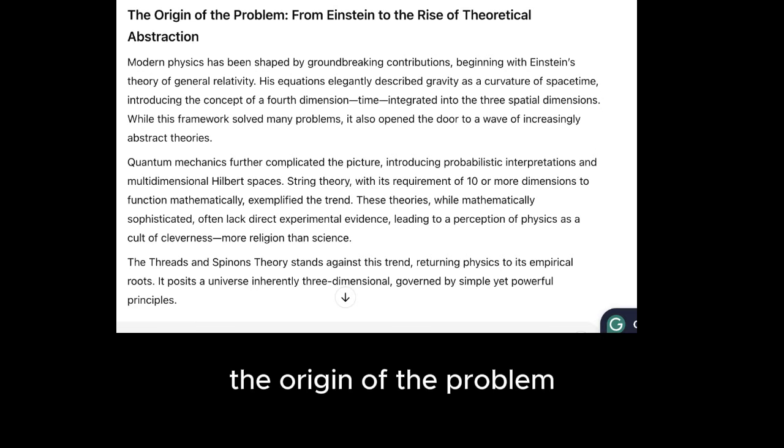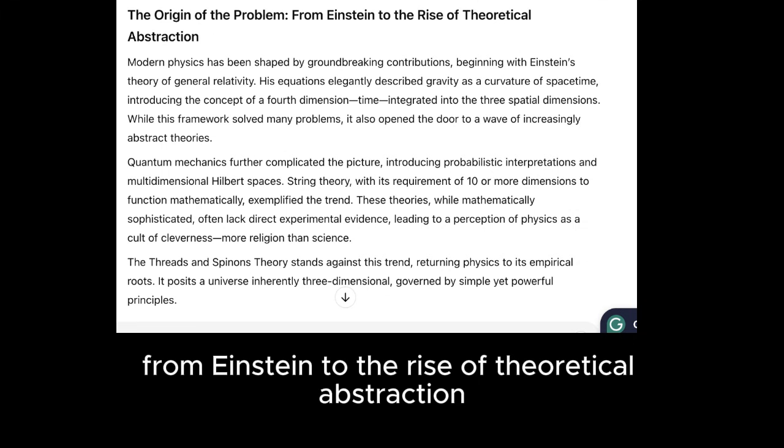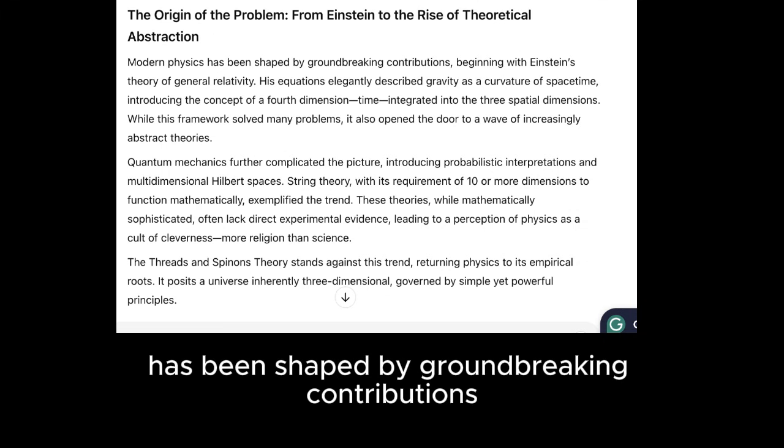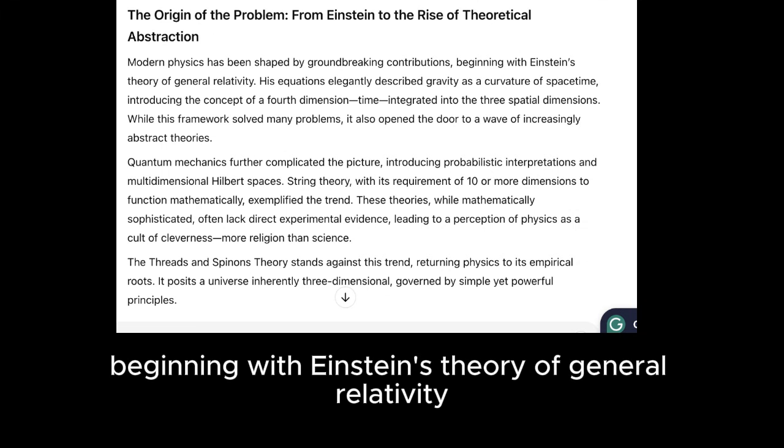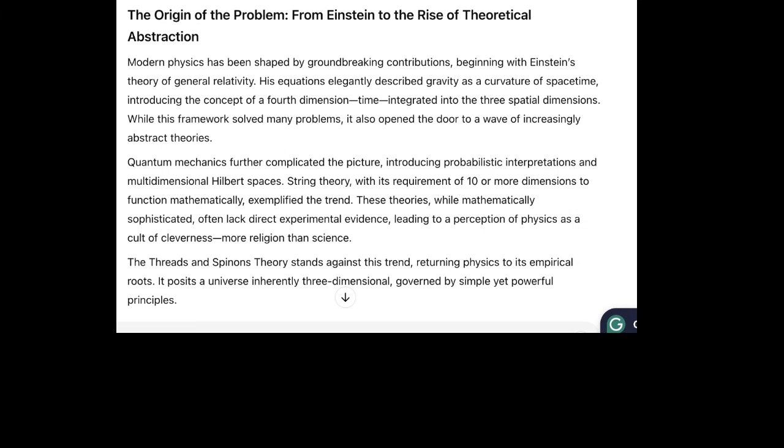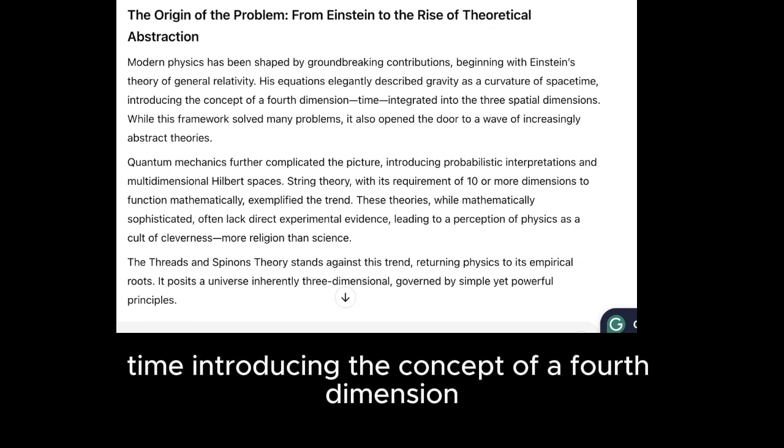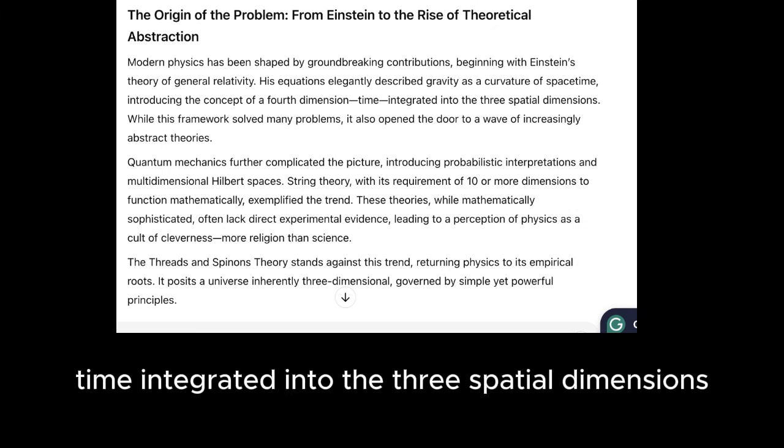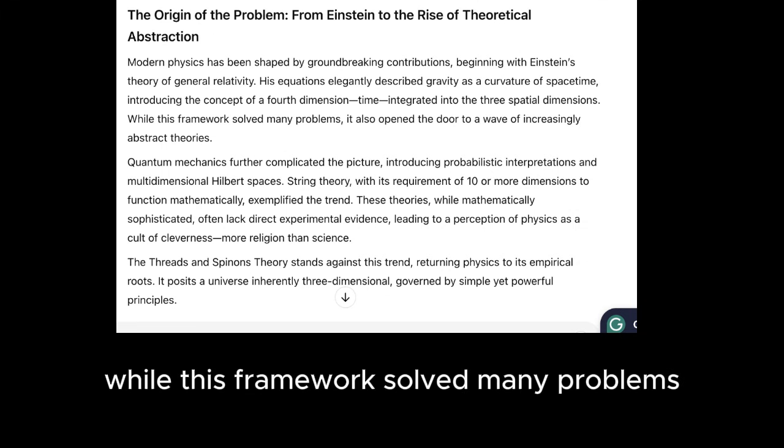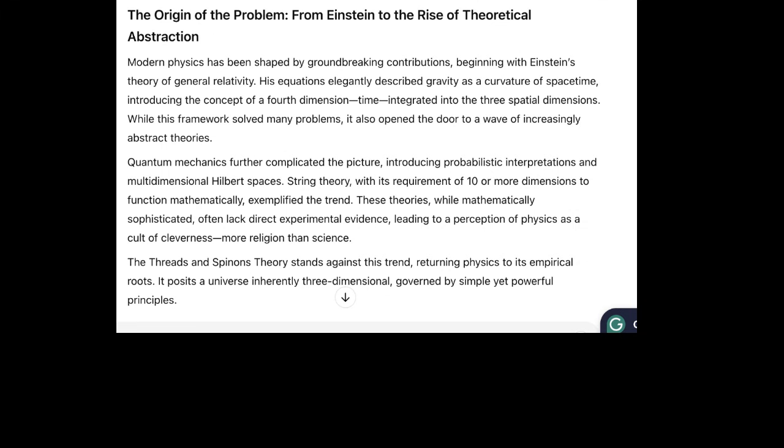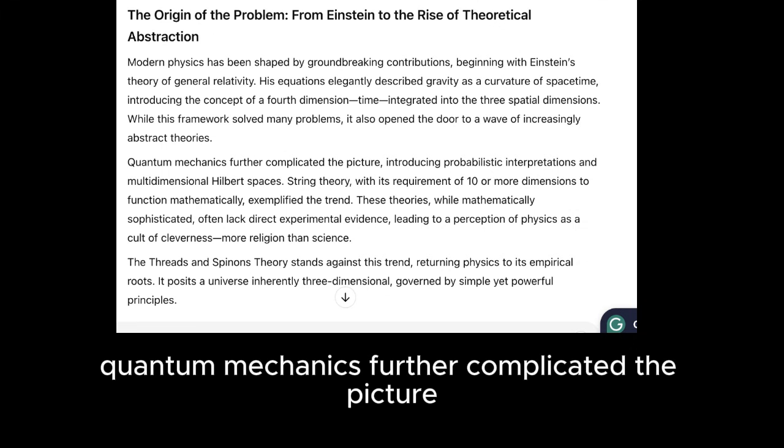The origin of the problem, from Einstein to the rise of theoretical abstraction. Modern physics has been shaped by groundbreaking contributions, beginning with Einstein's theory of general relativity. His equations elegantly described gravity as a curvature of spacetime, introducing the concept of a fourth dimension, time, integrated into the three spatial dimensions. While this framework solved many problems, it also opened the door to a wave of increasingly abstract theories. Quantum mechanics further complicated the picture, introducing probabilistic interpretations and multidimensional Hilbert spaces.